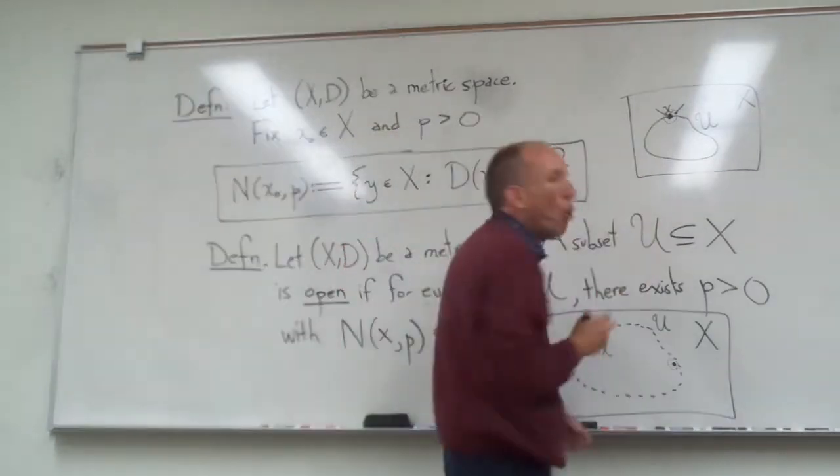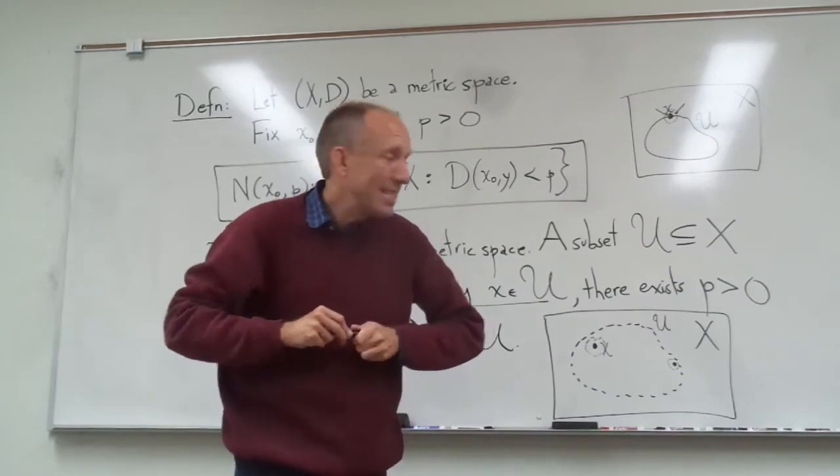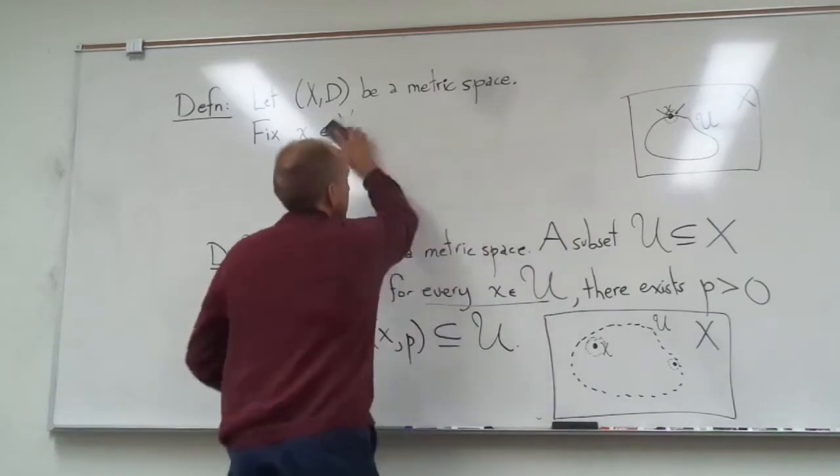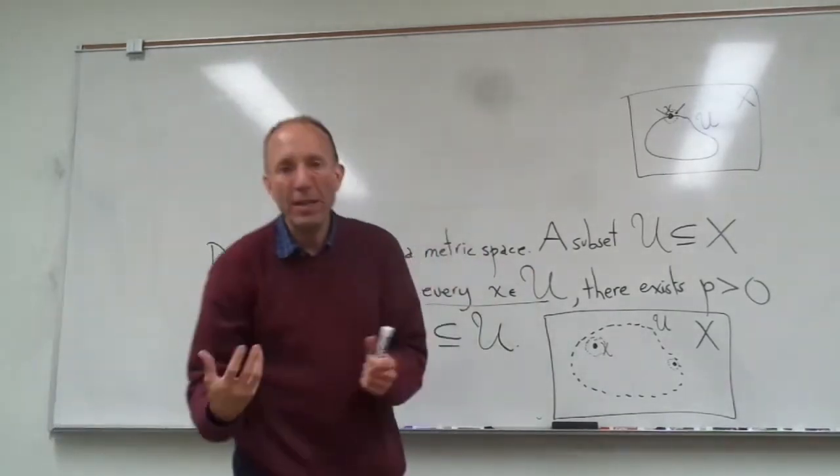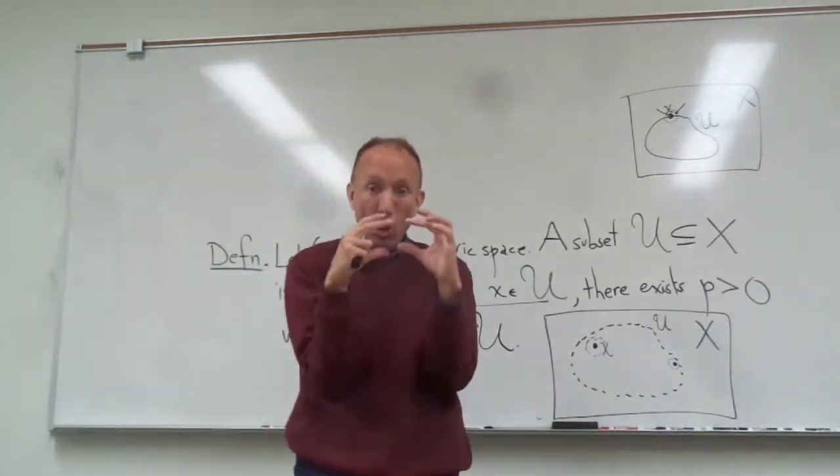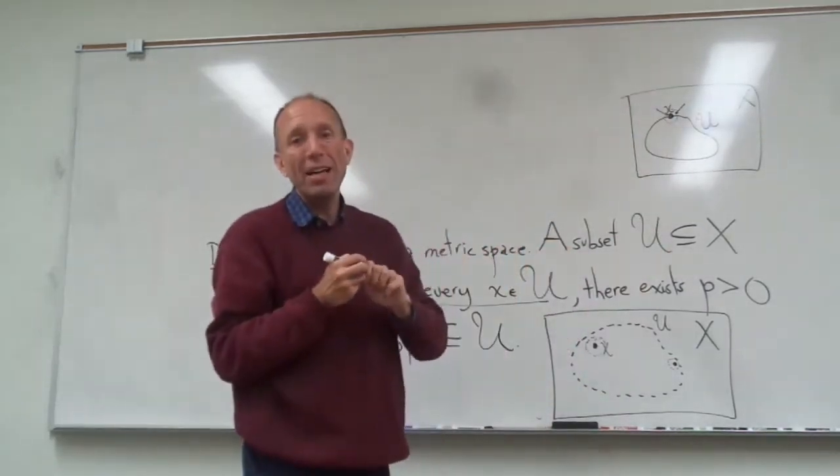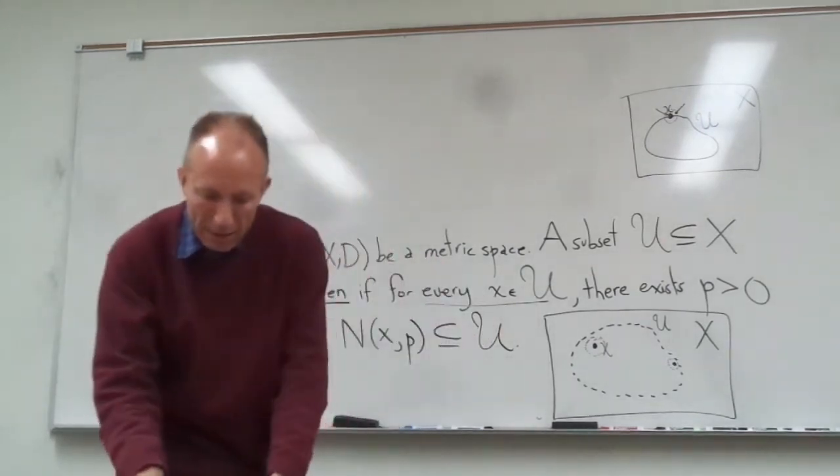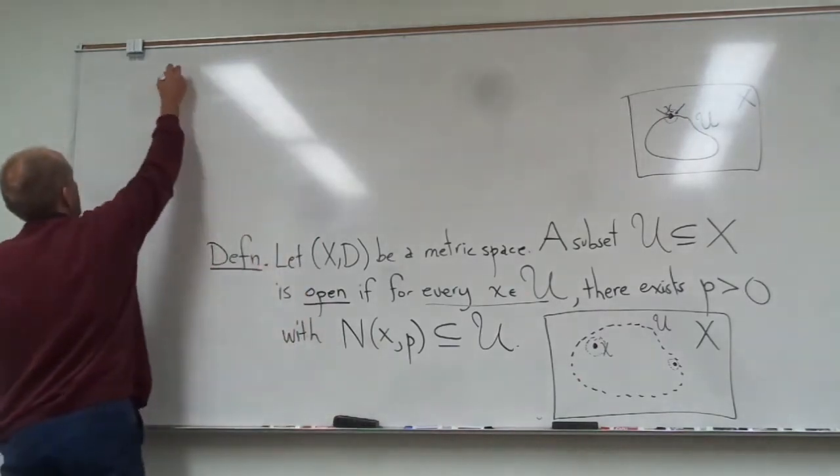So essentially an open set, you can kind of think of it like this, it doesn't have a boundary. Anytime you have boundary points, like if you can be on the edge of the set, that's not going to be an open set. Because any neighborhood around a point that is already sitting on the edge of the set is going to fail to stay inside of that neighborhood. No matter how small you try to make the p. Let me give you just a couple of examples of this, a little bit more specific examples.